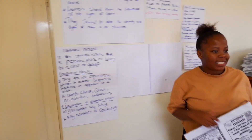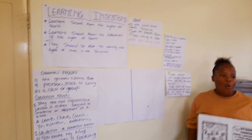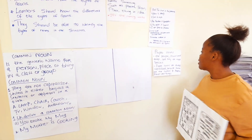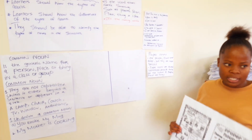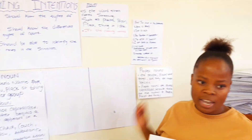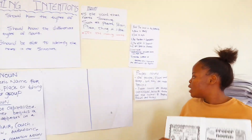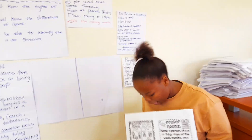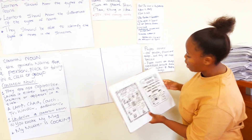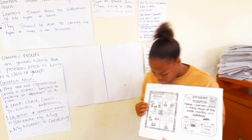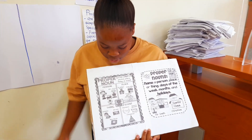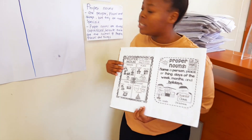My learners, I'm going to do proper nouns with you. What are proper nouns? Proper nouns are people, places, and things, but they are more specific. Proper nouns are always capitalized because they are the names of specific people, places, and things. Under person, we have Tom, we have Cindy, we have Miss Jones.